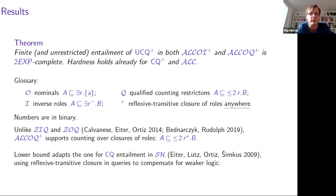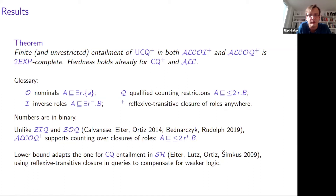This brings us to the main result of the paper. Using those three ingredients and the basic idea, we can show that finite — and also unrestricted — entailment of unions of conjunctive queries with transitivity atoms is decidable for two logics: extensions of ALC. We can either add nominals and inverse roles, or nominals and qualified counting restrictions. In both cases, we can use reflexive transitive closures of roles anywhere — in particular, counting over closures of roles is allowed, which was forbidden in previous related work. The lower bound is an adaptation of a hardness result for CQ entailment in the logic SH.